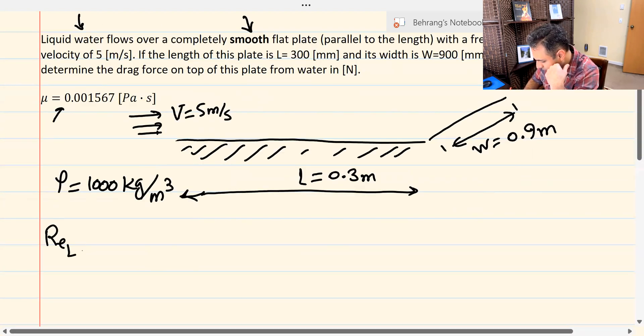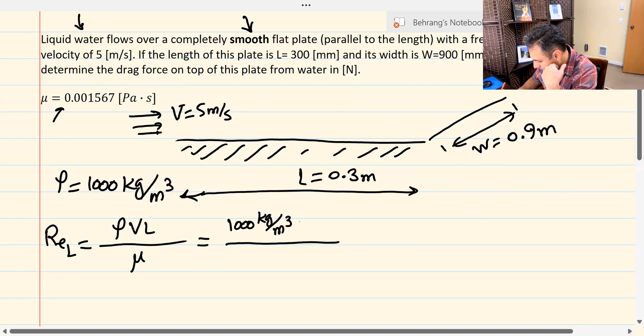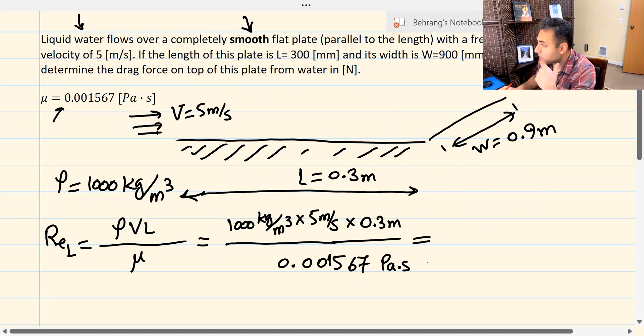So we're going to calculate the Reynolds number for this problem. Reynolds L would be, and we're looking for the total drag force, so that's why I'm calculating the Reynolds L. Rho V L over mu. So that would be 1,000 kilograms per meters cubed times velocity, 5 meters per second times length, which is 0.3 meters, over viscosity, which is 0.001567 pascal second. I already calculated the Reynolds number. And the value is 956,985.